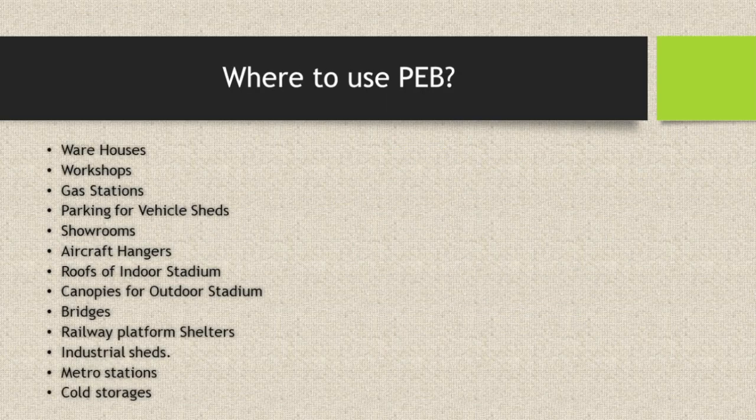Now, where do we use PEB? Pre-Engineered Buildings are used in workshops, gas stations, parking and vehicle sheds, showrooms, aircraft hangars, indoor stadiums, roofs, outdoor stadiums, canopies, bridges, railway platform shelters, industrial sheds, metro stations, and coal storages.